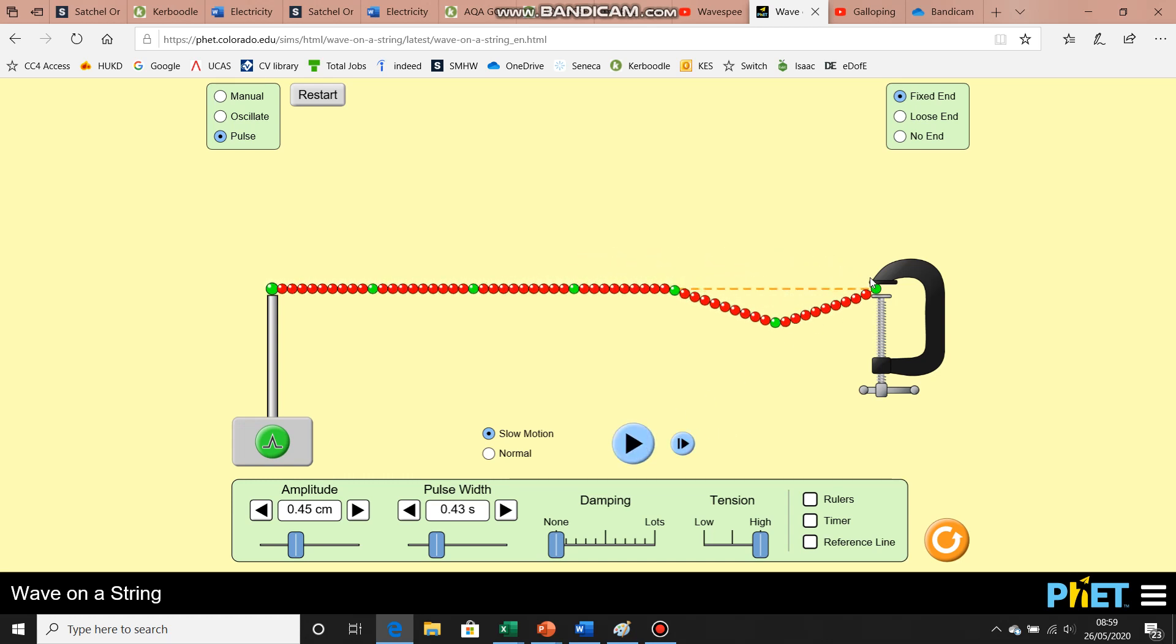If you notice, we had a peak coming in, and when it reflects off the end here, we now get a trough. With this particular system I've got set up here, the damping is zero, so there's no energy lost to either end and so the wave will carry on indefinitely. In real life, of course, there would be some damping and you wouldn't see that continuing.